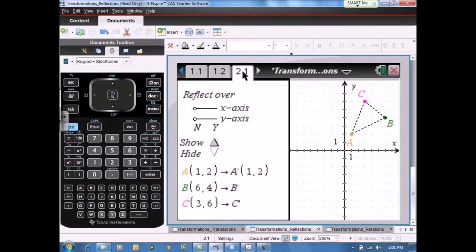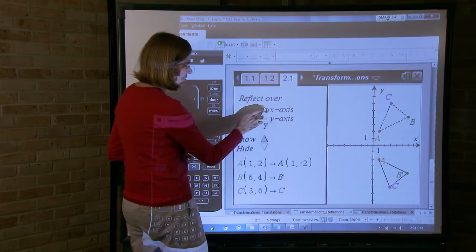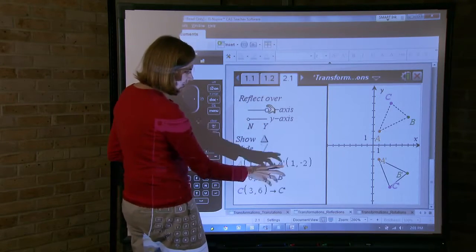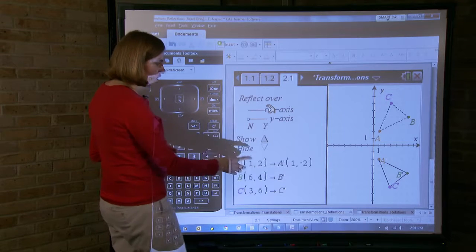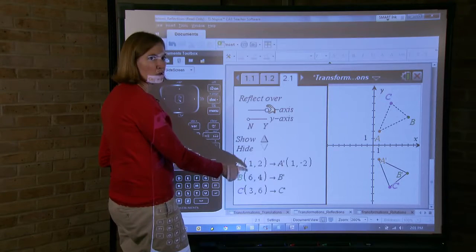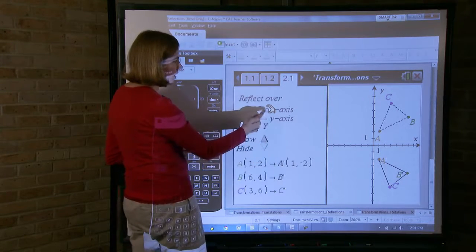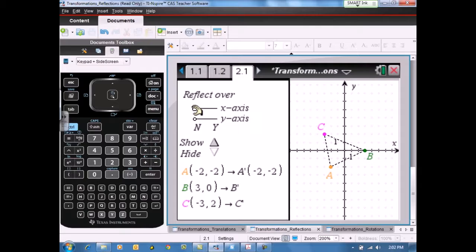As you move through this document, you also look at reflections in the XY coordinate plane. You can reflect the triangle over an axis. The student handout can fill out charts that help them see what is happening to the ordered pairs. They enter into the mathematical practice of looking for regularity and repeated reasoning. Ultimately, they get into the math practice of reasoning abstractly and quantitatively as well because ultimately we want them to generalize what happens to the ordered pair XY when it is reflected about the X axis.